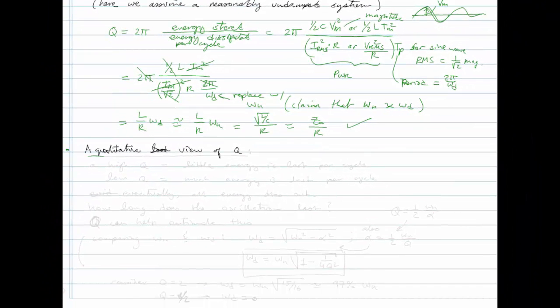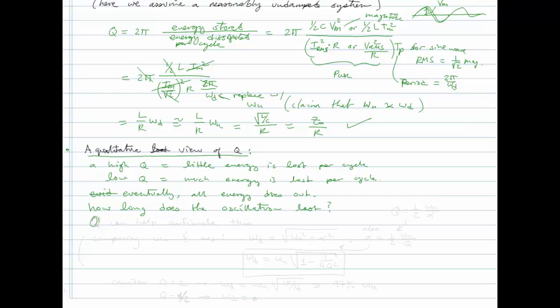Let's take a qualitative view of Q. A high Q means little energy is lost per cycle, while a low Q means much energy is lost per cycle. In both cases, eventually all energy dies out, but the question is how long does it take — how long does the oscillation last? The quality factor can help us estimate this.